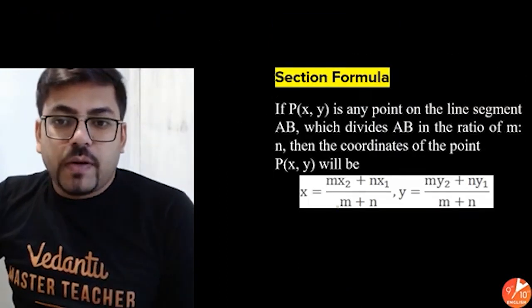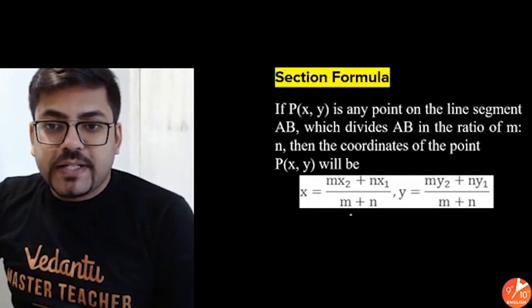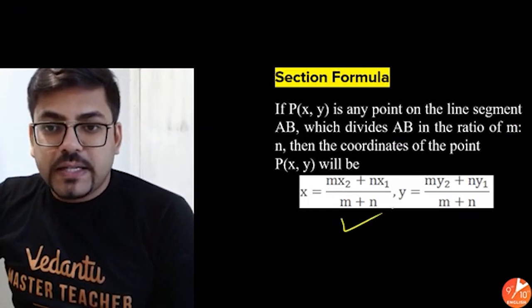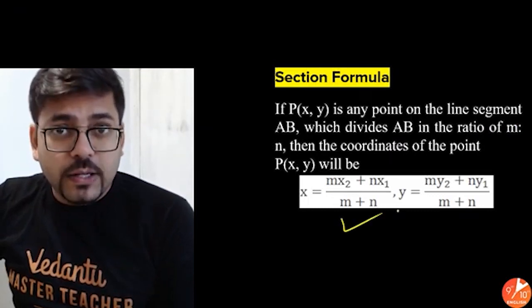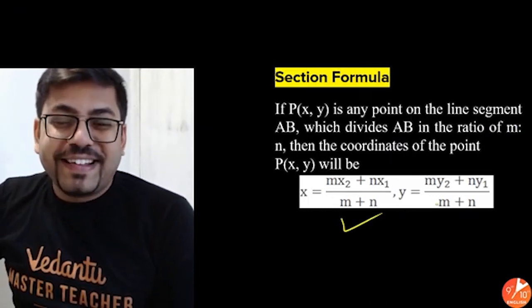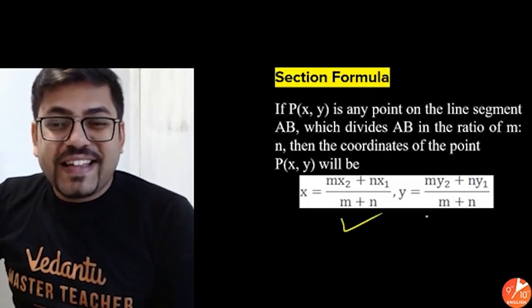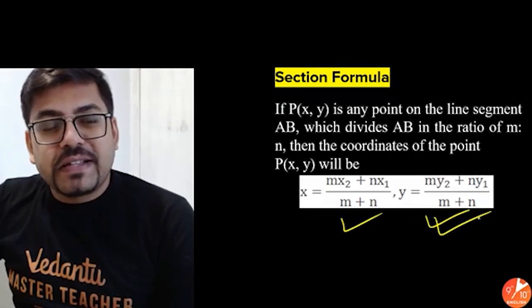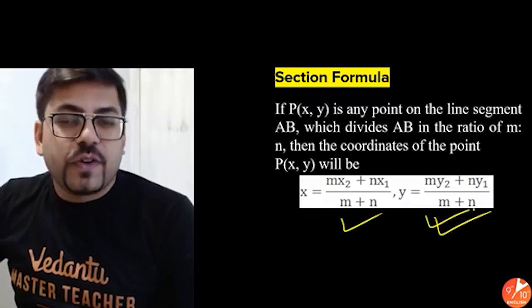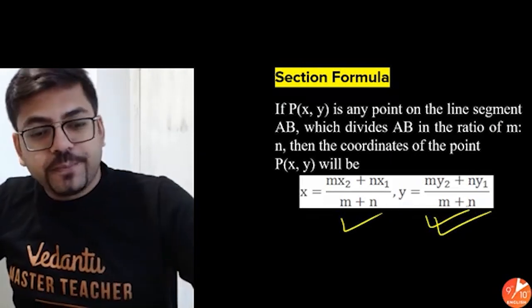So the same formula: X is M·X2 plus N·X1 upon M plus N — please write it down — and Y is M·Y2 plus N·Y1 upon M plus N. That is for Y.